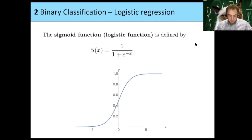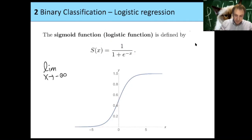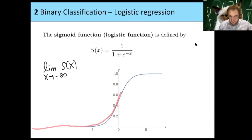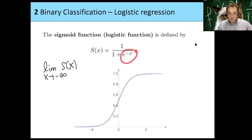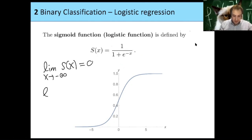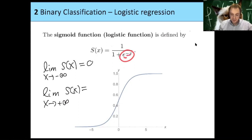This function satisfies two key properties: first, it is between 0 and 1. Second, the limit as x goes to minus infinity is 0, because e to the minus x goes to plus infinity, giving 1 over something very large. And as x goes to plus infinity, e to the minus x goes to 0, so we get 1 over 1, which equals 1. At x equals 0, the value is one half.